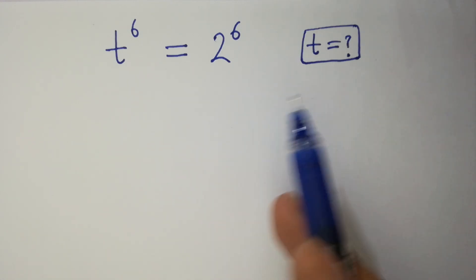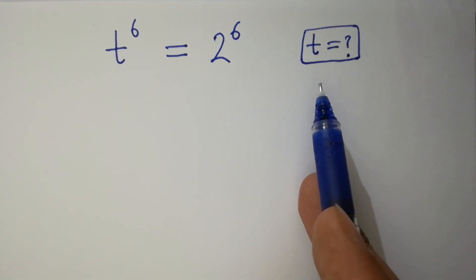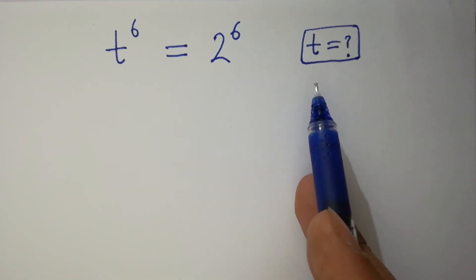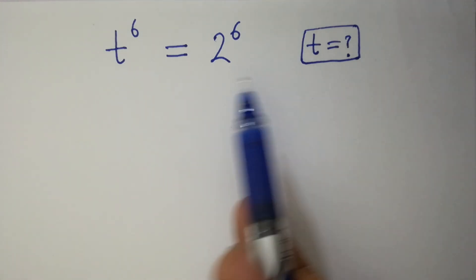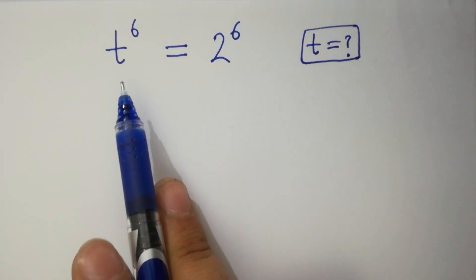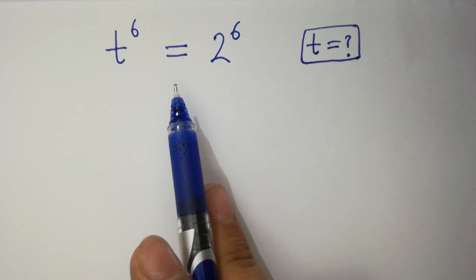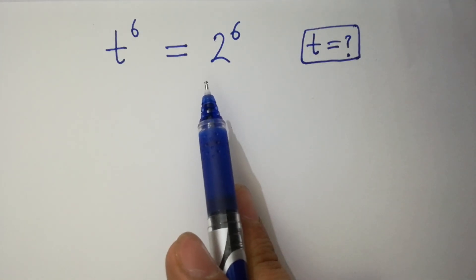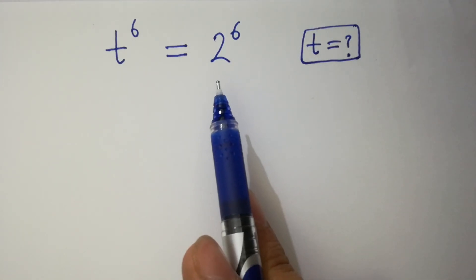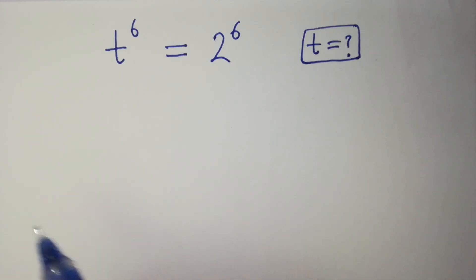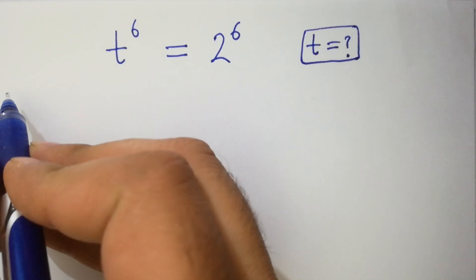Hello friends, find the value of t if t to the power 6 equals 2 to the power 6. Let's have a solution.